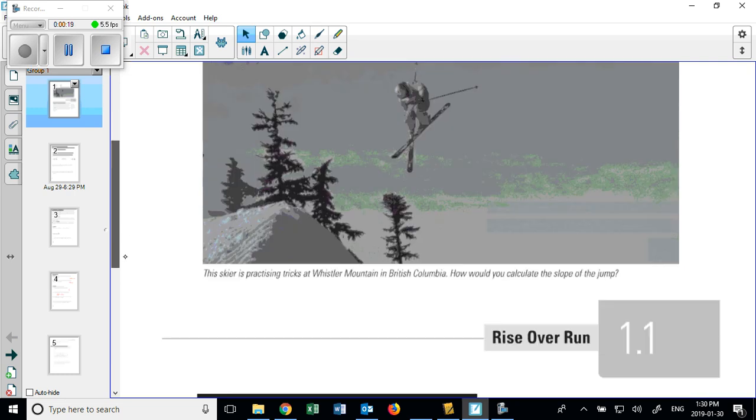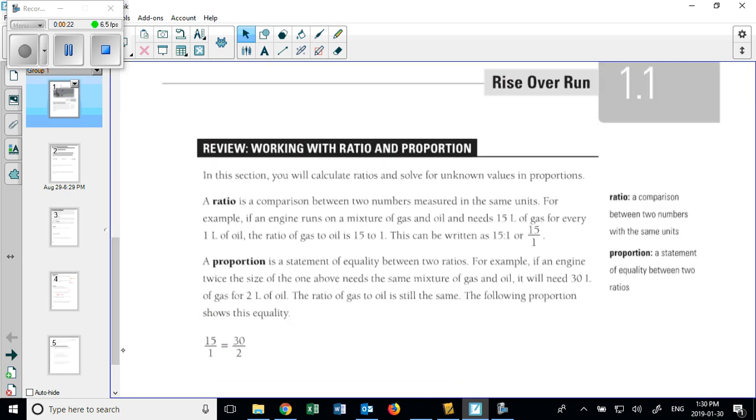So, slope, hit the slopes. Rise over run is what we're going to be focusing on, mathematical slopes. A couple of things, words. Ratio, it's a comparison between two numbers measured in the same units. So if you rise up three feet, your run should also be measured in feet, not inches. The example here, engine runs on a mixture of gas and oil, 15 liters for every one liter of oil. They're the same unit. Then you could say it's a 15 to 1 ratio.